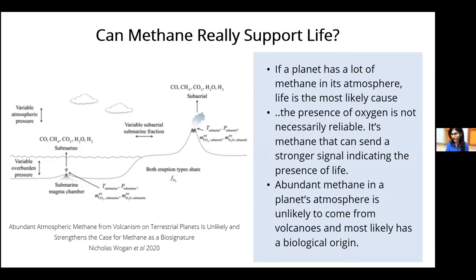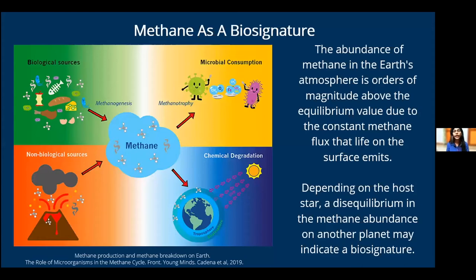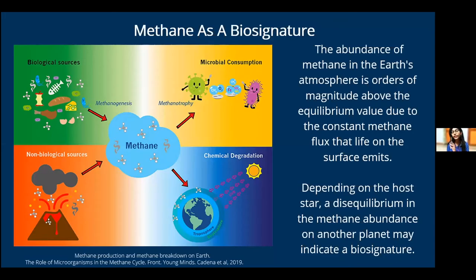Why do I say this? Let's see in this slide where we see methane as a biosignature. When we take the Earth's equilibrium value, there is an abundant methane flux which is constantly replenished by methanogenic bacteria by a process called methanogenesis, which converts into methanotrophy. But it doesn't count for all planets because, depending upon the different types of star spectra, the indication of methane as a biosignature differs. We'll see this in detail.